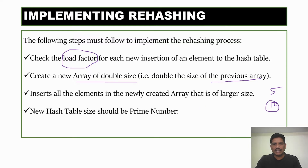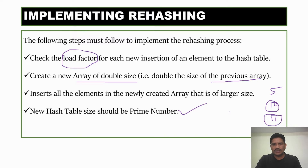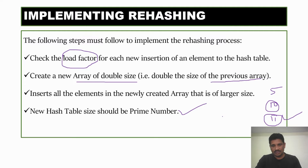But we don't take size 10 directly, because the new hash table size should be a prime number. After 10, the next prime number is 11. Whenever you consider the prime number, it must be greater than 10. So 11 is the prime number, and we need to consider 11 as the new hash table size.